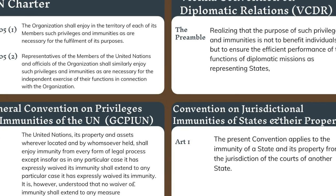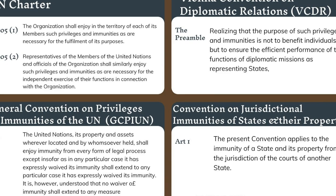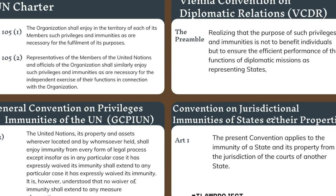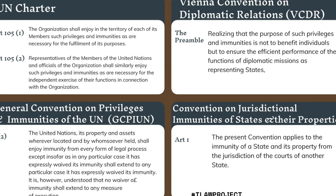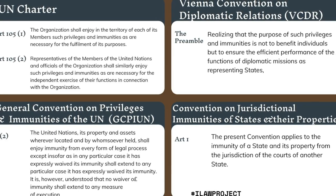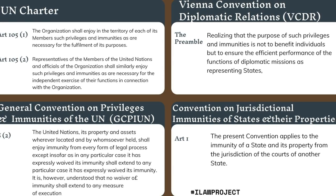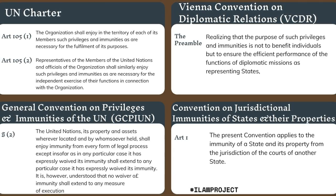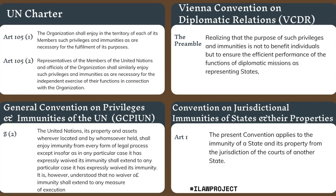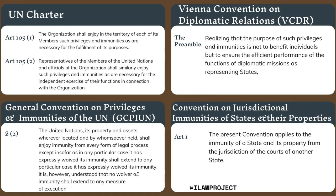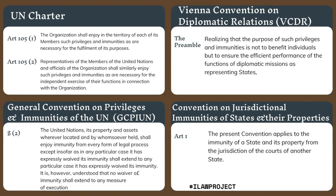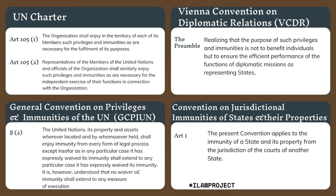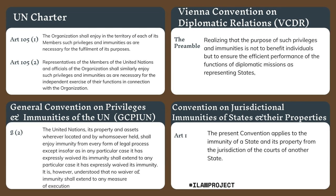There are a number of international instruments that touch on the principle of diplomatic immunity. We have the United Nations Charter — see Article 105, Paragraph 2. The Vienna Convention on Diplomatic Relations (VCDR) regulates the relations between receiving and sending states. The General Convention on Privileges and Immunities of the UN (GCPRI-UN) regulates relations between the UN and receiving states. The Convention on Jurisdictional Immunities of States and their Properties regulates how receiving states are to deal with the sending states' properties. I have provided the hyperlink to this instrument in the transcript below.